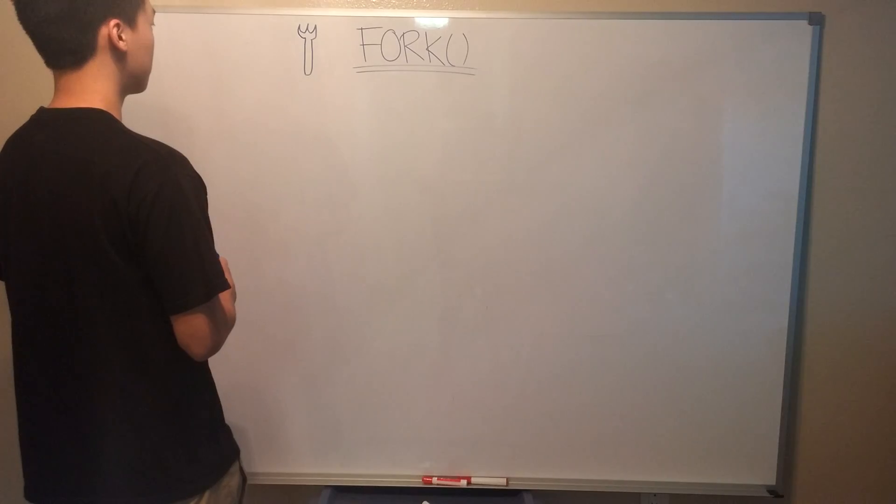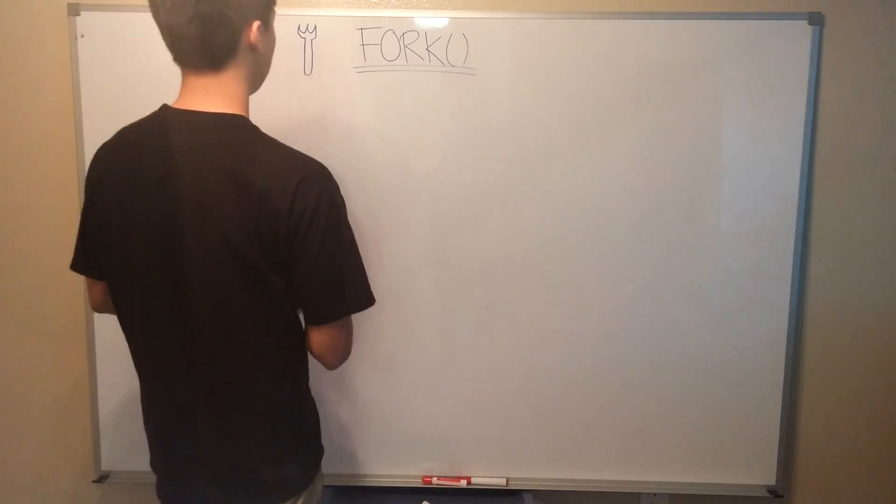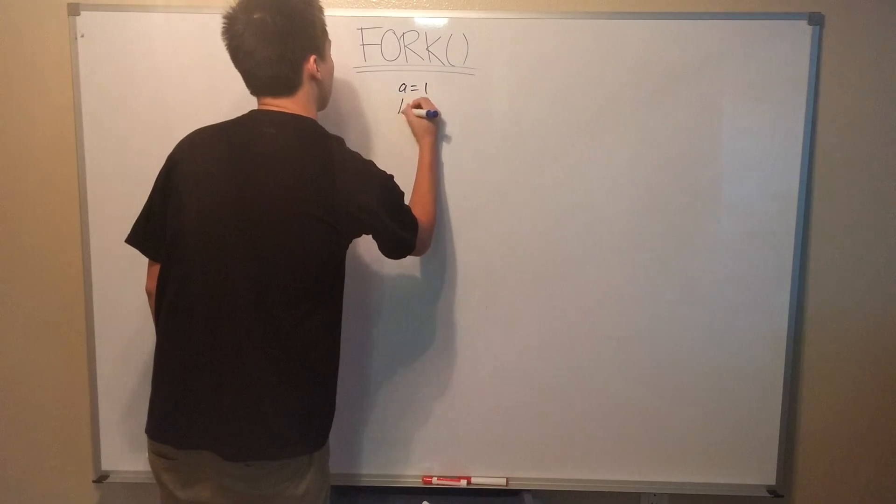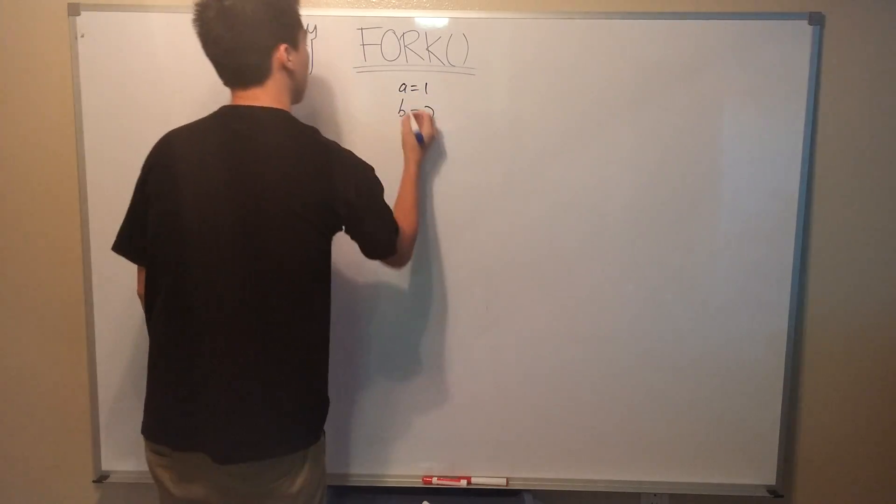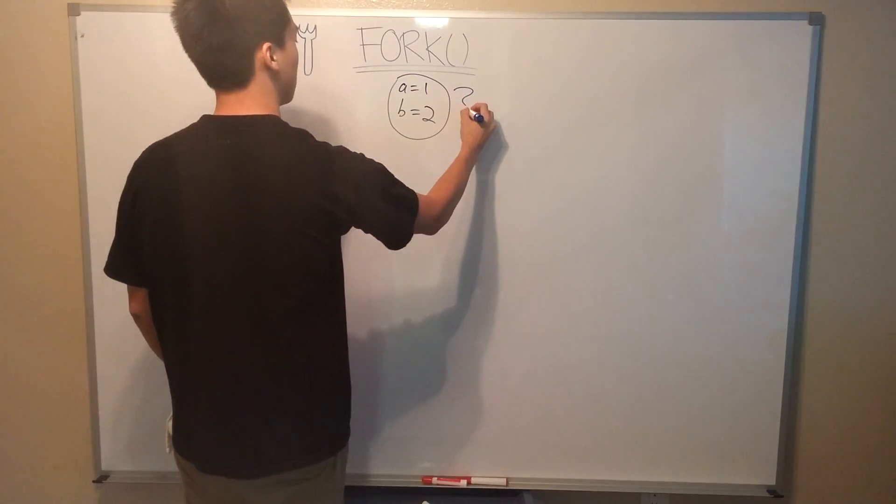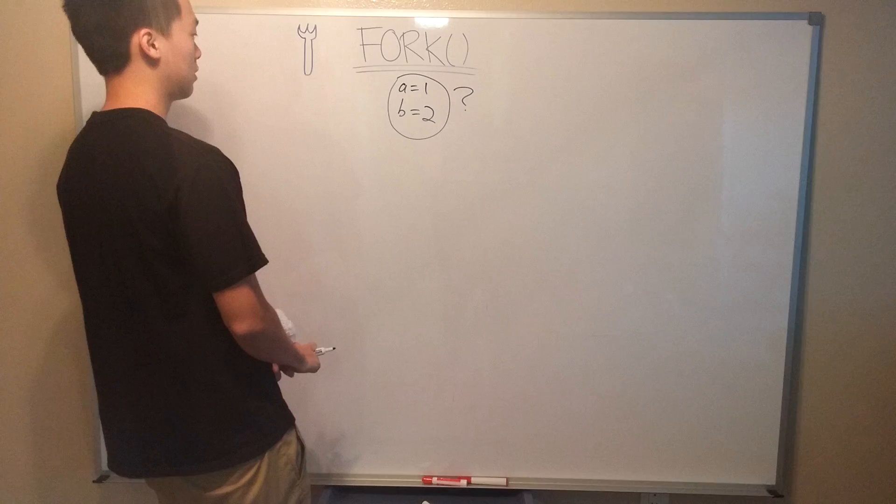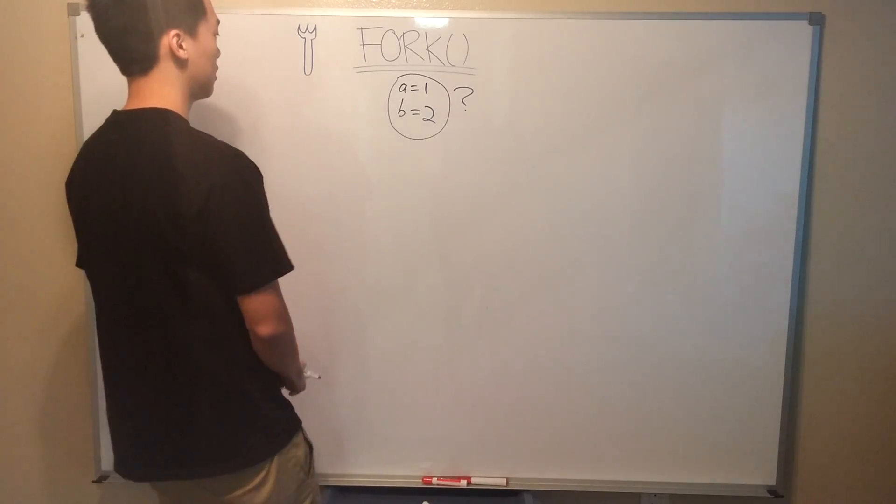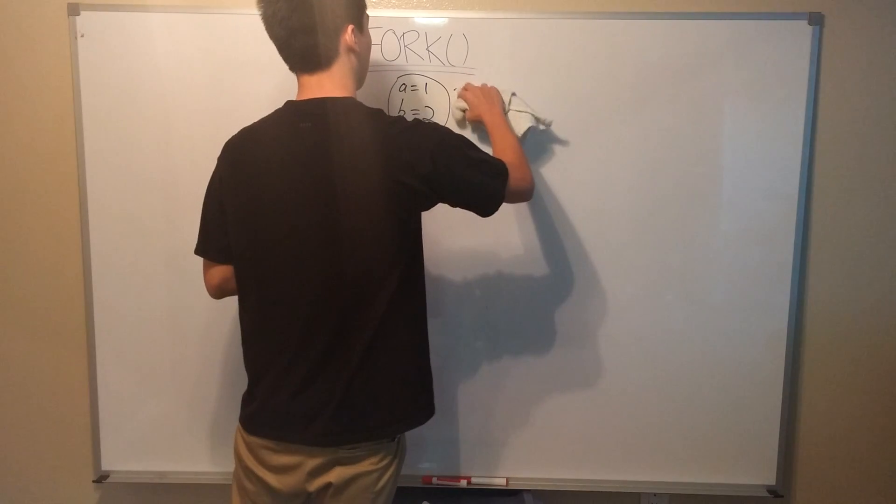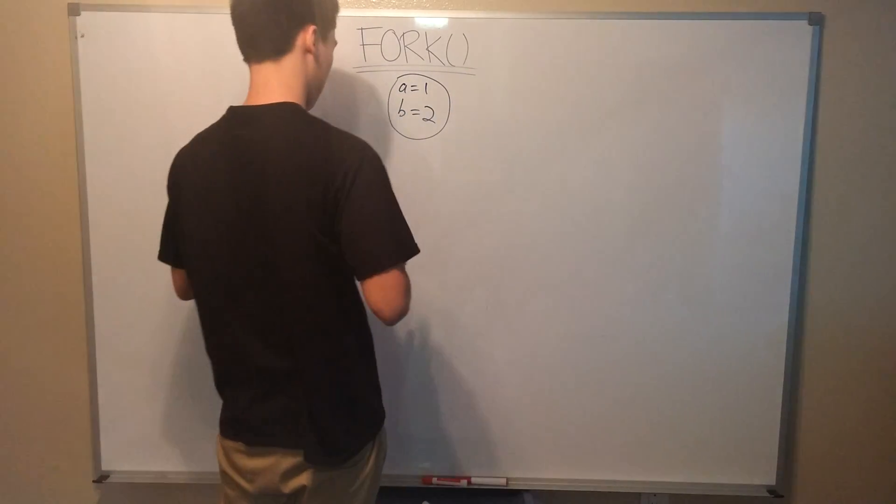Okay, let's say we have a process, our program that contains a couple of variables, a is equal to 1 and b is equal to 2. We will represent a process with a circle. Now, how would we identify this process? All active processes are uniquely identified by PID or process identifier. For simplicity of our video, let's assign this process with a PID of 5.